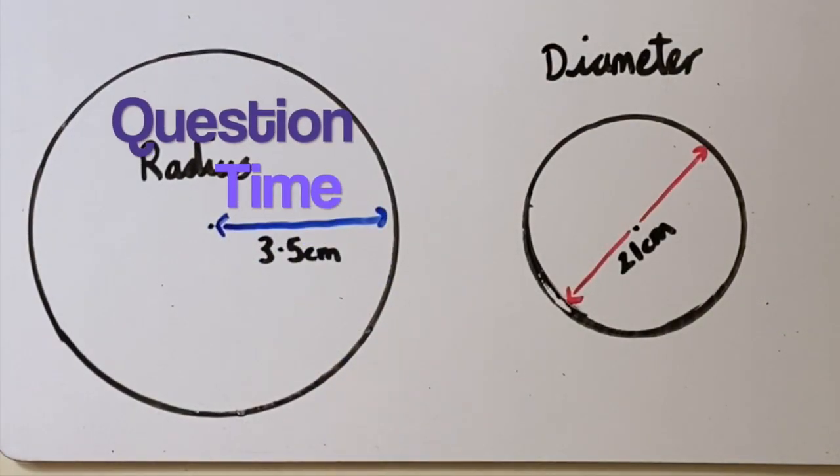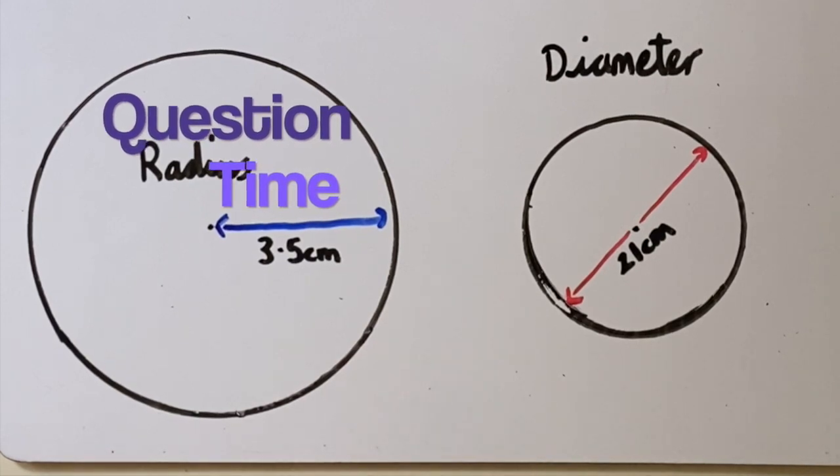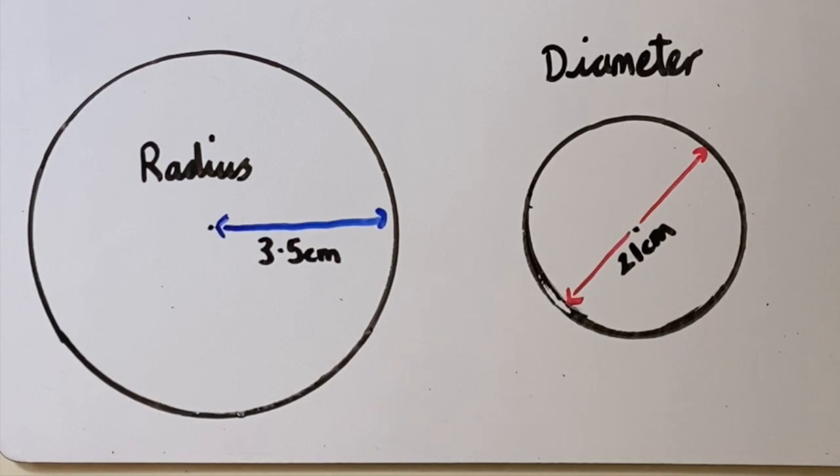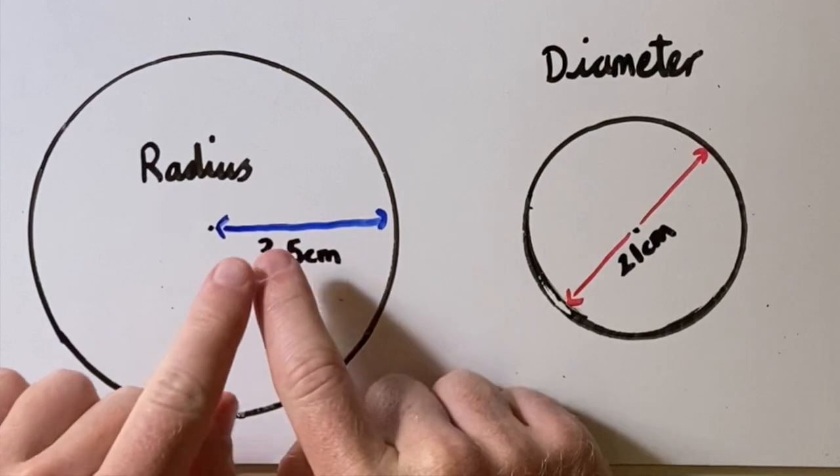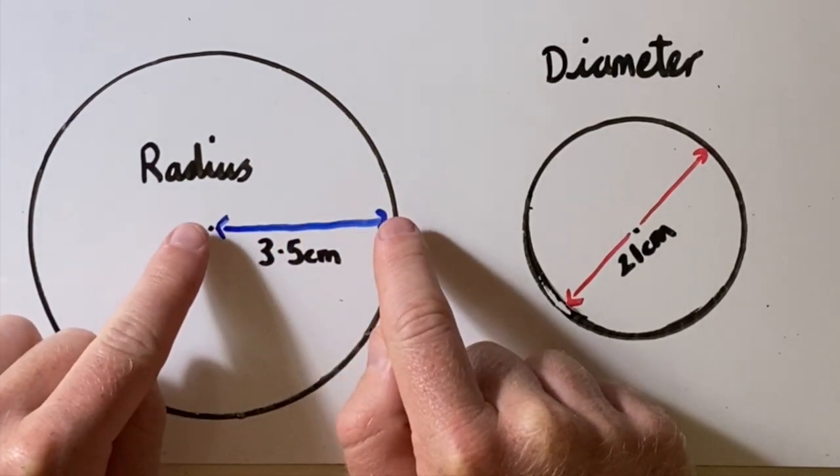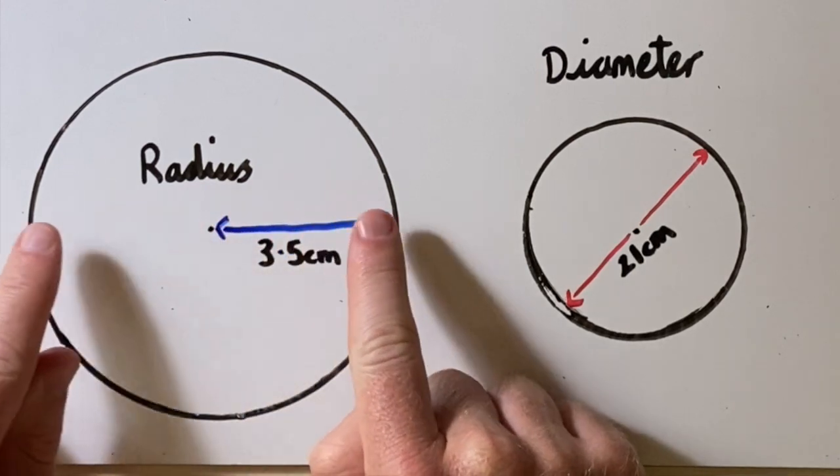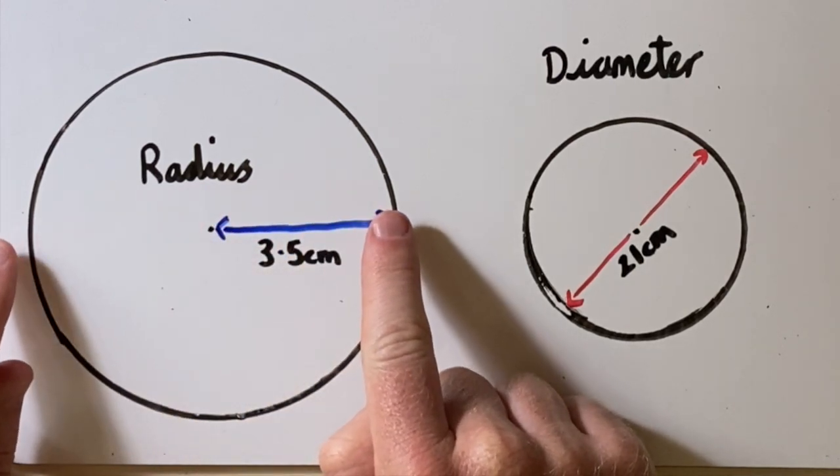I'm going to finish the video today with a couple of questions. And if you would like to, you can comment with your answer in the comment section down below. So in this circle, I have a radius of 3.5 cm. So what I would like to do is work out please the diameter of this circle.